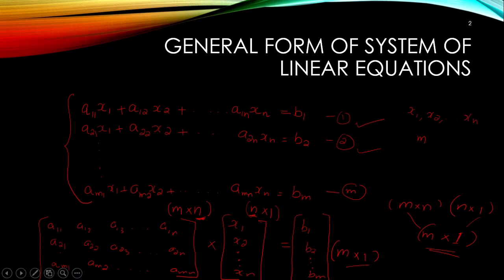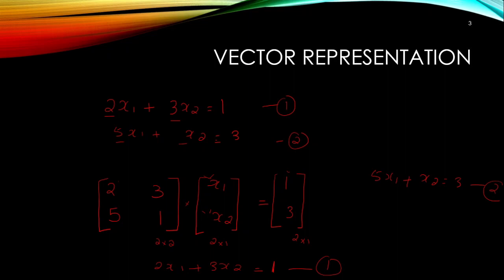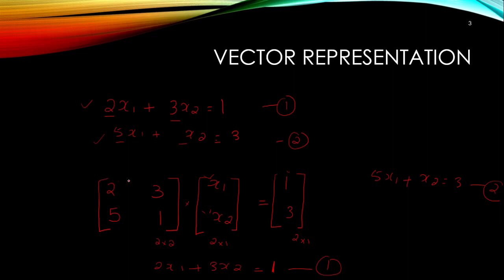This is how we represent a linear equation in matrix form. For example, take two equations: 2x1 + 3x2 = 1 and 5x1 + x2 = 3. We take the coefficients and form the coefficient matrix: first row is [2, 3] corresponding to the first equation, and second row is [5, 1] corresponding to the second equation, multiplied with column vector [x1, x2] equals [1, 3] on the right-hand side.